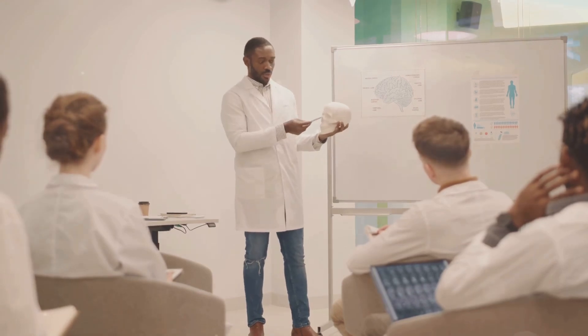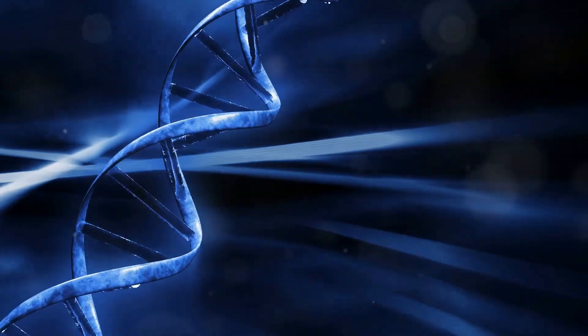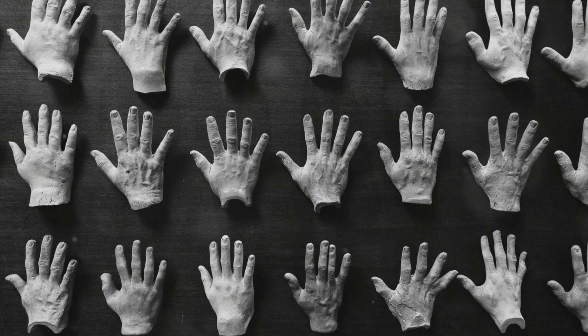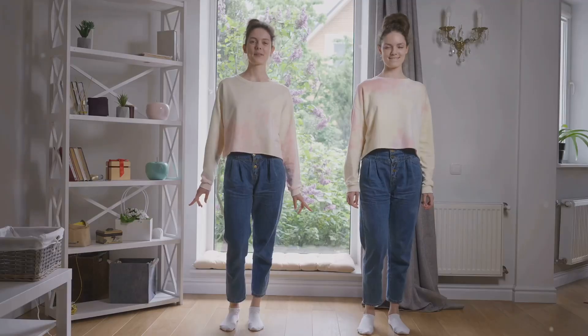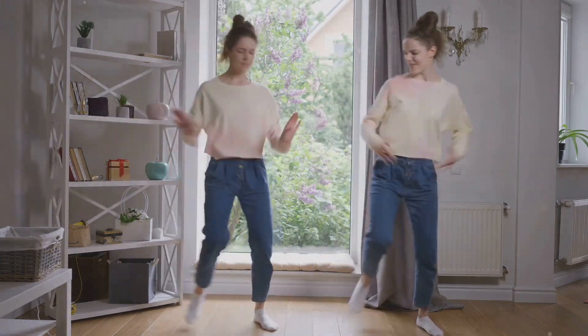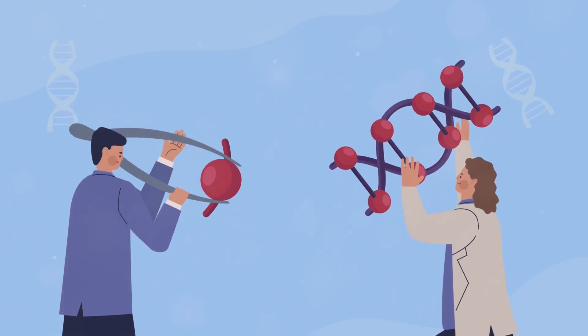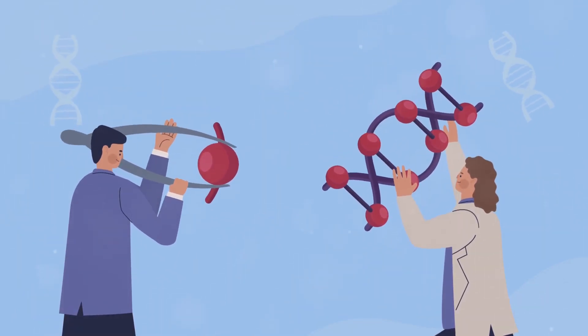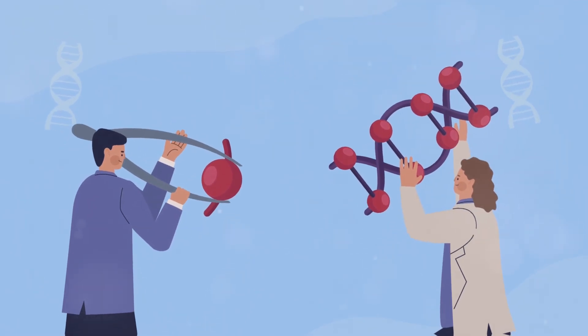Another misconception is that dominant traits are always more common or stronger than recessive traits. Dominance refers to how a trait is expressed, not its frequency or strength. For example, having six fingers is a dominant trait, but it is rare in the population. Many people also believe that identical twins have identical DNA and are exact copies of each other. While identical twins do have nearly identical genetic material, environmental factors and epigenetic changes can lead to differences between them over time.